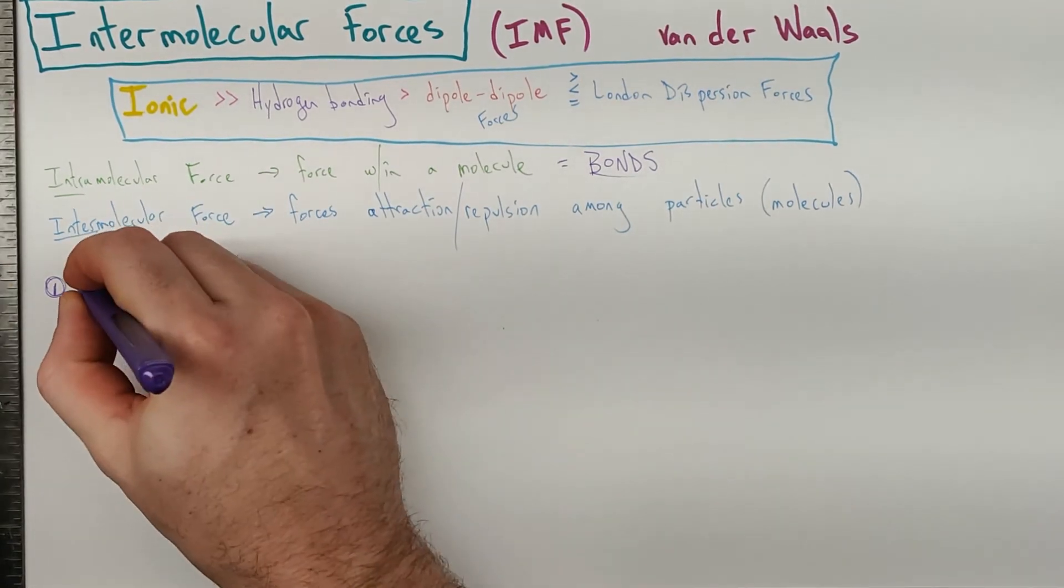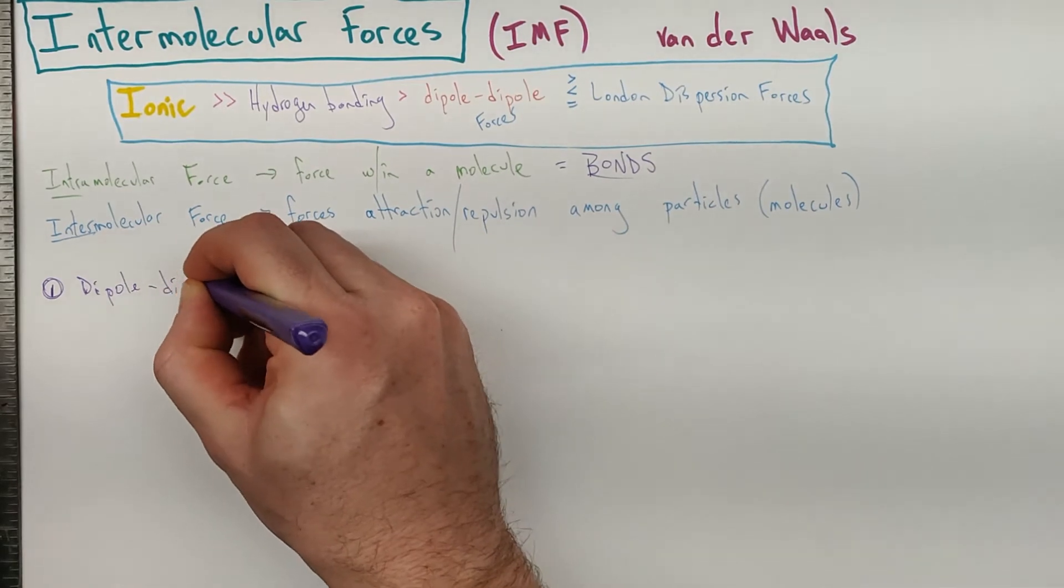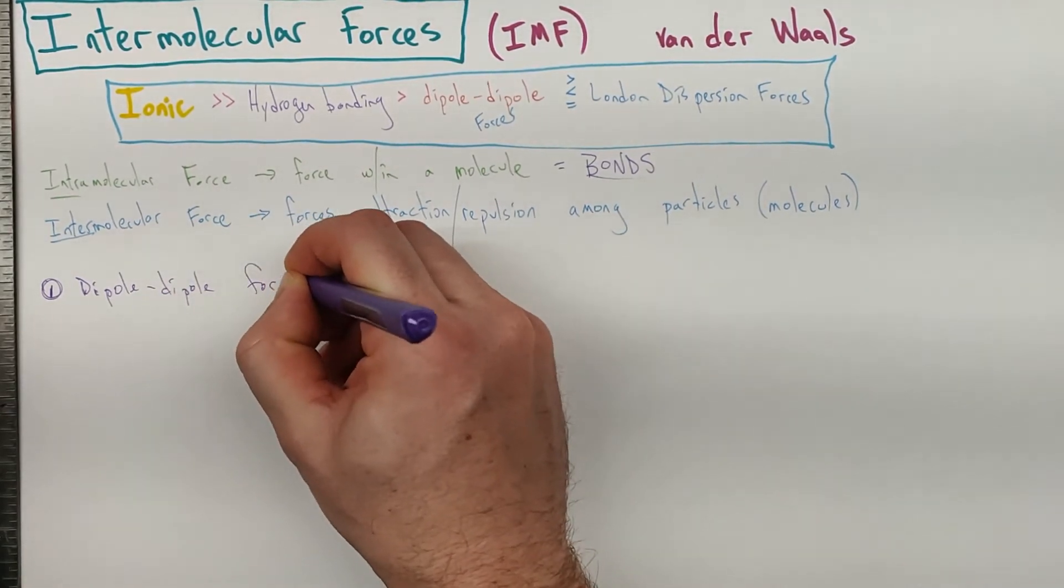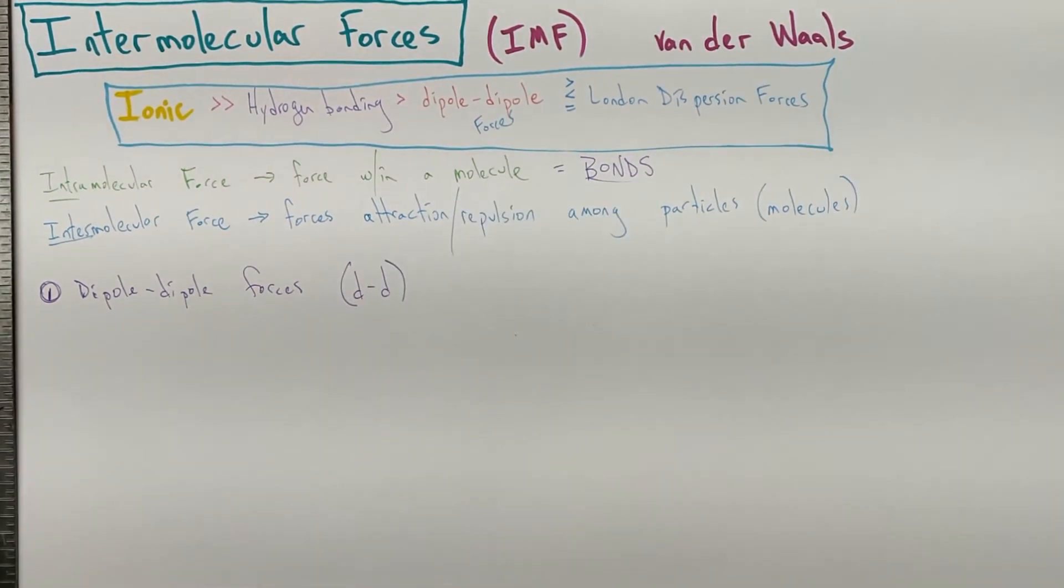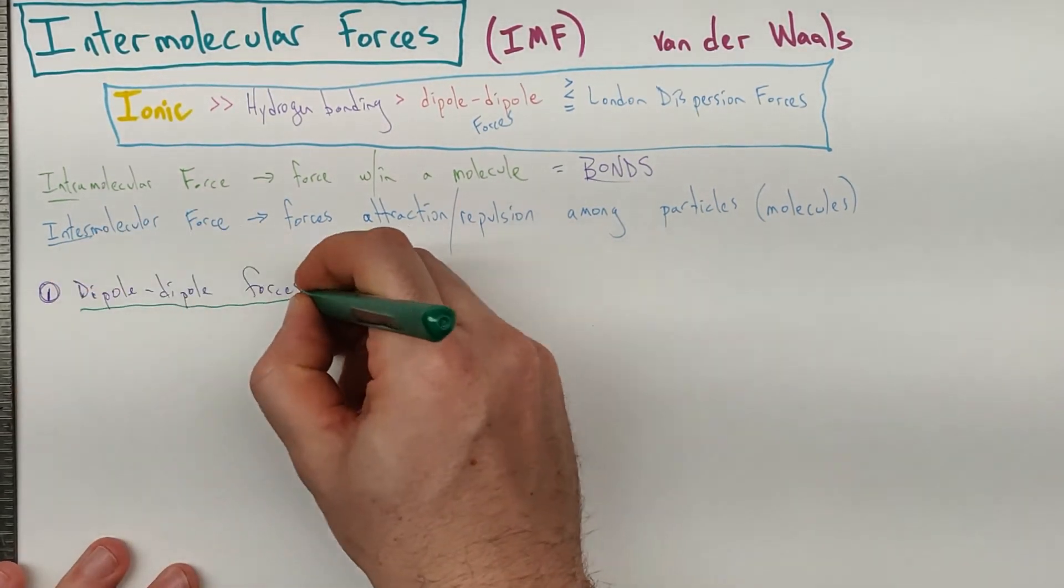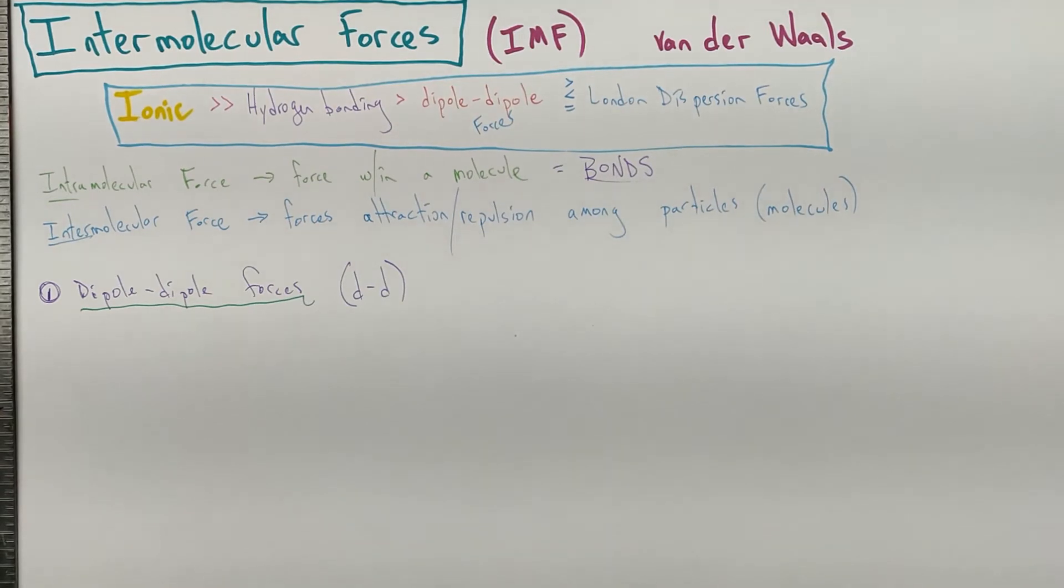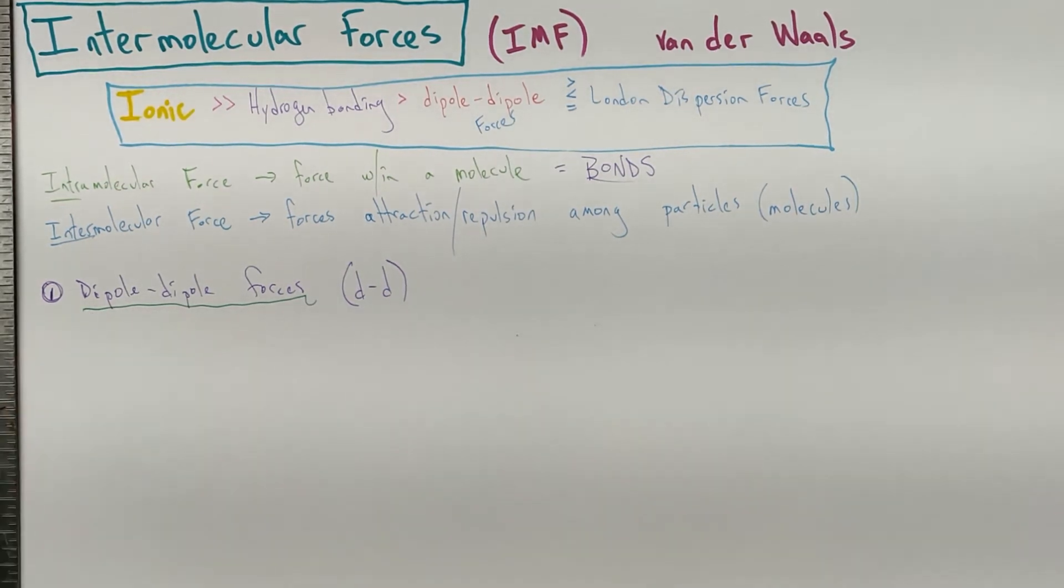Our first one that we'll look at is a dipole-dipole force. And I abbreviate that D-D. That may not be a super legit science abbreviation, but it saves me a fair bit of time. So dipole-dipole forces, what are we talking about? And in class, I would ask my kids, what do you have to have in order to have dipole-dipole forces? And hopefully, they would catch on to that and say, oh, you need a dipole. And what else do you need? You need another dipole.